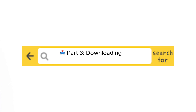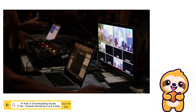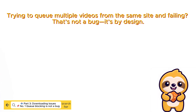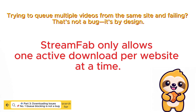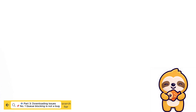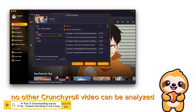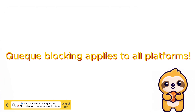Part 3. Downloading Issues. Number 1: Queue blocking is not a bug. Let's talk about download behavior. One question that often arises is why StreamFab seems to block other downloads when working with the same website. In fact, this is not a bug — it's by design. StreamFab follows a single task queue system for each supported platform, meaning it can only process one video download per site at a time. For example, if you're currently downloading a video from Crunchyroll, no other Crunchyroll video can be analyzed or added to the queue until the current task finishes. This rule applies uniformly across all supported platforms.